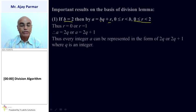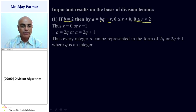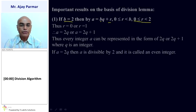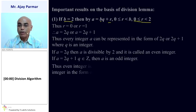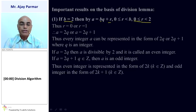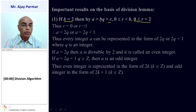So for every integer A, which can be represented in the form of 2Q — which is the general form of an even number — or 2Q plus 1, which is the general form of an odd number, where Q is an integer: if A is equal to 2Q, it is divisible by 2 and is an even integer; if A is equal to 2Q plus 1 and Q belongs to Z, then A is an odd integer. Thus, an even integer is represented as 2K where K belongs to Z, and an odd integer is represented as 2K plus 1, where K belongs to Z.